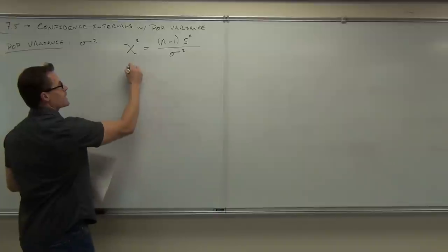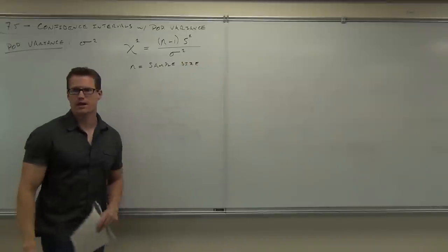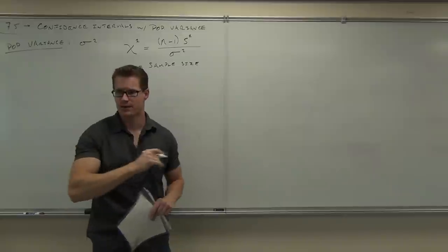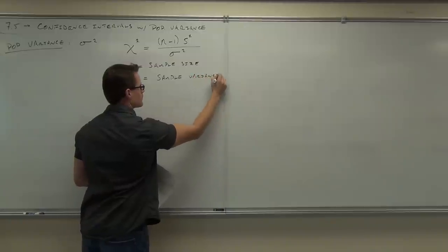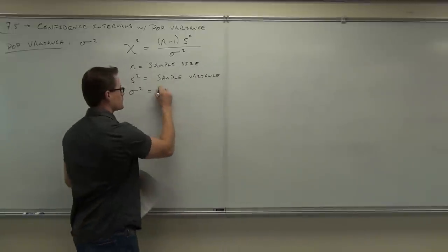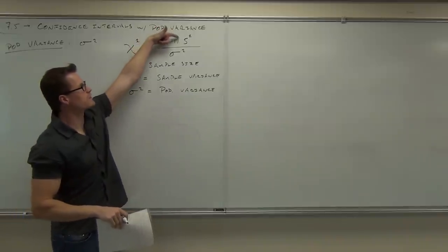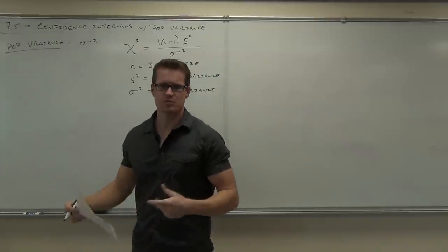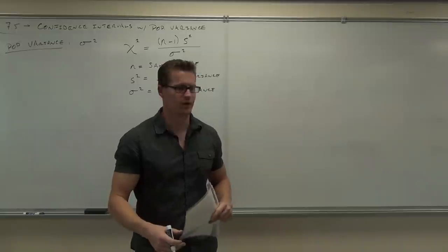We've got N as sample size, S as sample standard deviation, so S squared is sample variance, and sigma squared is our population variance. Notice how this formula compares your sample variance to your population variance, and it's also based on your sample size. Larger samples have a different reading than smaller samples, because the larger our samples, the more accurately we're going to depict our population variance with our sample variance.